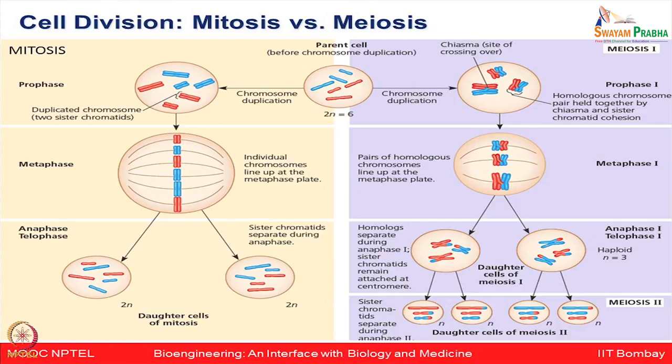In meiosis, the blue and red chromosomes have some interaction, and in certain regions a crossing over happens. This crossing over site is known as the chiasma. At this point, some genes start getting shuffled from the blue to the red chromosomes — so from maternal and paternal sides, few genes shuffle to both chromosomes. The homologous chromosomes pair and are held together by the chiasma, and the sister chromatids are held by cohesin proteins.